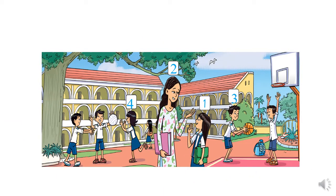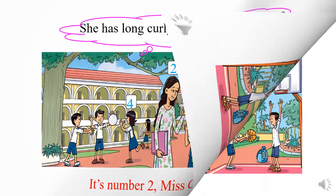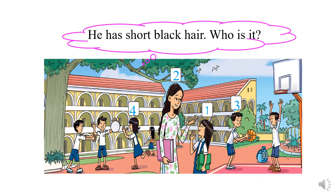Next. She has long, curly, black hair. Who is it? Good. It's number two, Miss Yi. And the last one: he has short black hair. Who is it? Very good. It's number three, Sean.